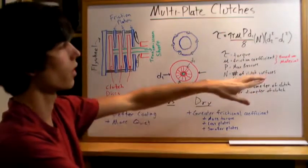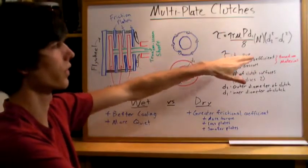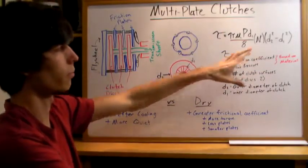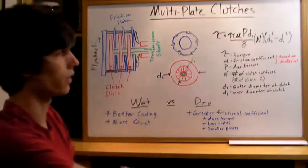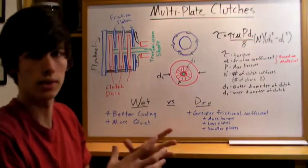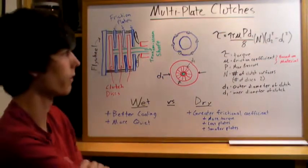Formula One cars are going to use multiple plate clutches, and that way they can have them pretty small by increasing the number of discs. And then motorcycles, obviously, you need something small because motorcycles aren't very big.